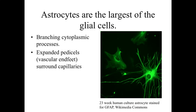Astrocytes are the largest of the glial cells. Astro means star, cyte means cell — they are star-shaped cells with very long, branching cytoplasmic processes. At the tips of many of these processes, we have expanded pedestals — essentially foot-like extensions referred to as vascular end feet.